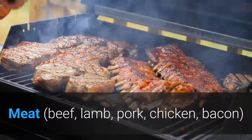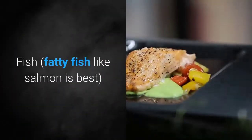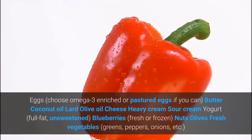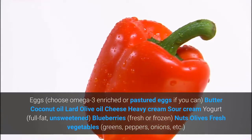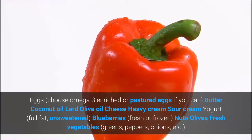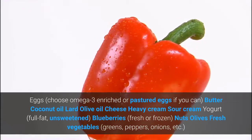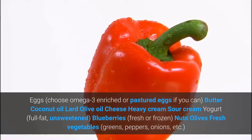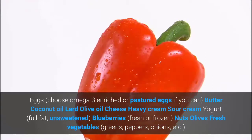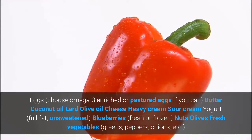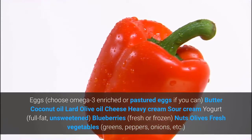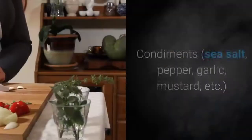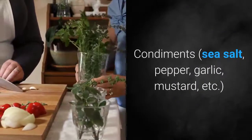Shopping list items: Meat — beef, lamb, pork, chicken, bacon. Fish — fatty fish like salmon is best. Eggs — choose omega-3 enriched or pastured eggs if you can. Coconut oil. Lard. Olive oil. Heavy cream. Sour cream. Yogurt — full fat, unsweetened. Blueberries — fresh or frozen. Nuts. Olives. Fresh vegetables — greens, peppers, onions, etc. Frozen vegetables — broccoli, carrots, various mixes. Condiments — sea salt, pepper, garlic, mustard, etc.